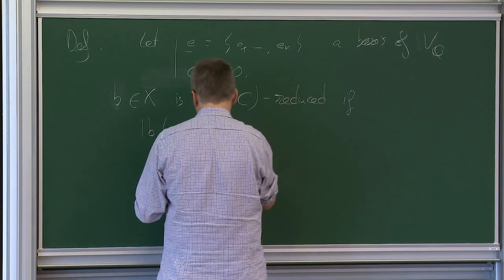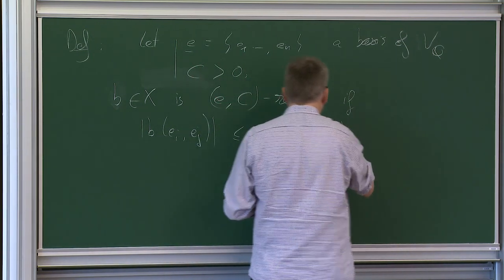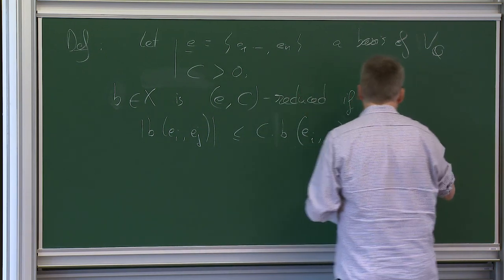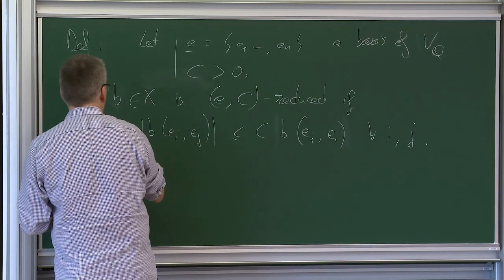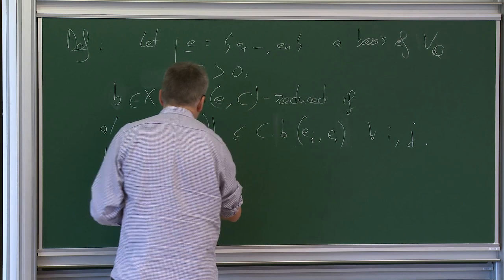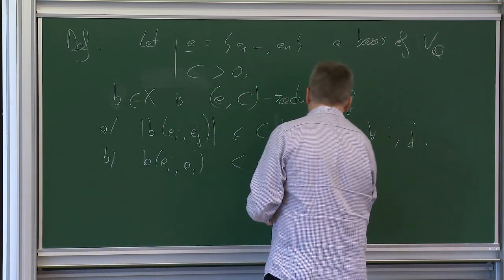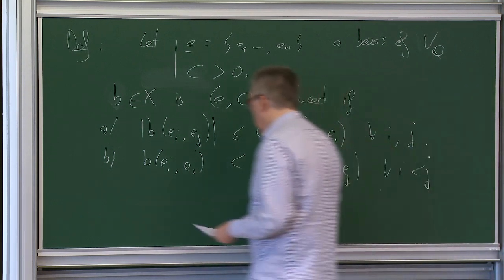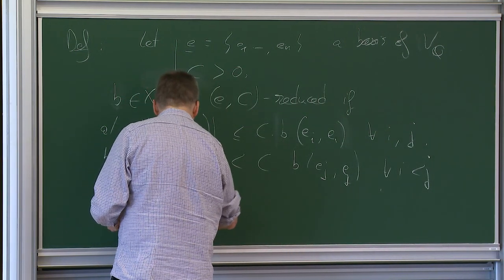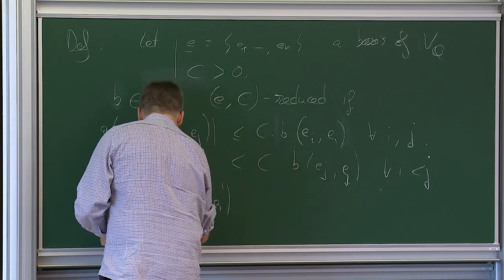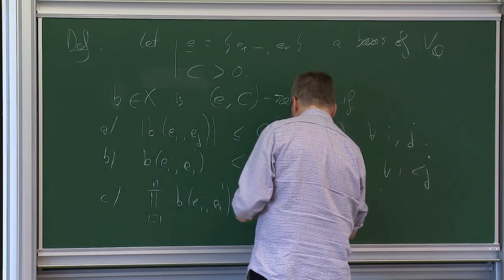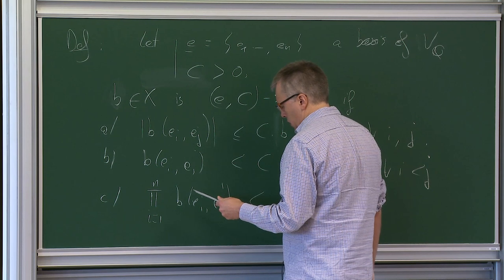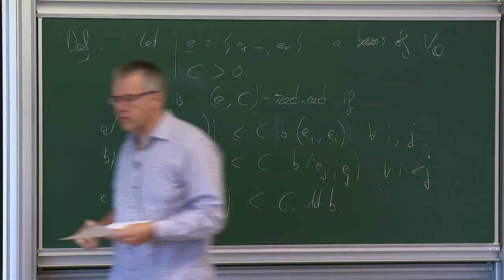Let me recall the definition I gave last time. Let E = {e_1,...,e_N} be a basis of V_Q and C a positive constant. Then an element B in X is EC-reduced if: first, for the quadratic form you have a condition on the vectors of your basis; second, B satisfies an ordering condition; and third, you bound the product — you take care of the determinant. The product for i=1 to N of B(e_i, e_i) is smaller than C times the determinant of B. These are the conditions classically given by reduction theory.